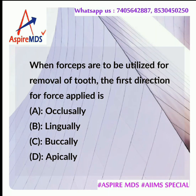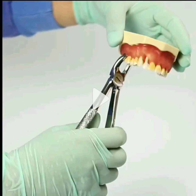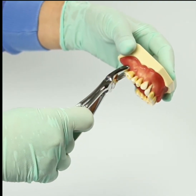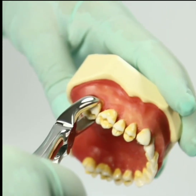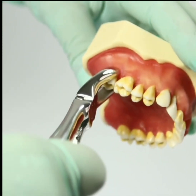When the forceps are to be utilized for removal of a tooth, the first direction of the applied force is: a) occlusal, b) lingual, c) buccal, or d) apical. The answer is d) apical. The first placement and applied force will be in the apical direction, so as to place the forcep properly.